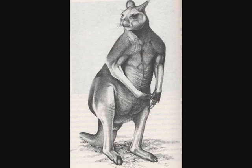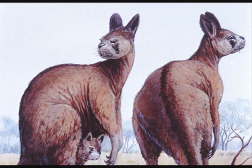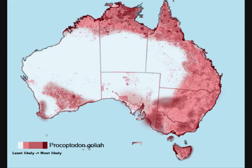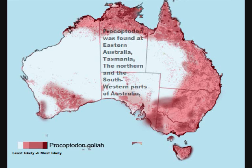Procoptodon goliah was the largest leaf-eating kangaroo of its time, and for that reason many believe it to have resided in a forest habitat. While the precise distribution and abundance of this massive creature is a mystery, this kangaroo flourished over much of Australia until about 40,000 years ago. Areas where Procoptodon goliah was most likely to live are highlighted in dark red, transposed on top of areas where forests exist today or fossil sites where Procoptodon has been found.